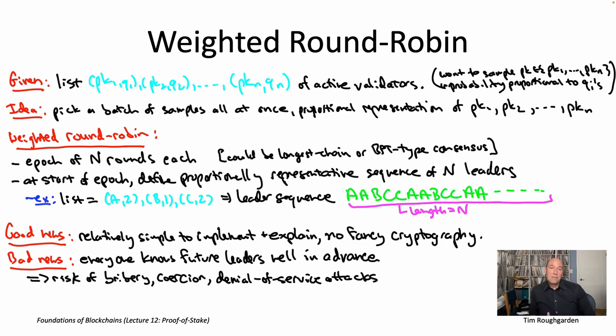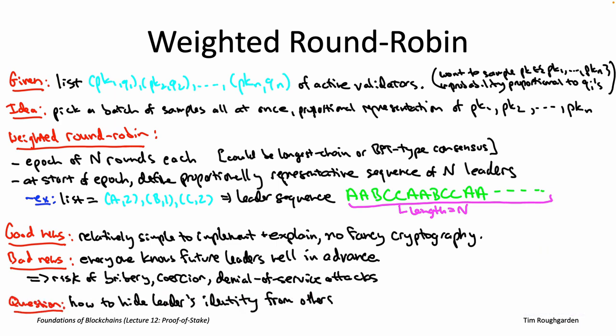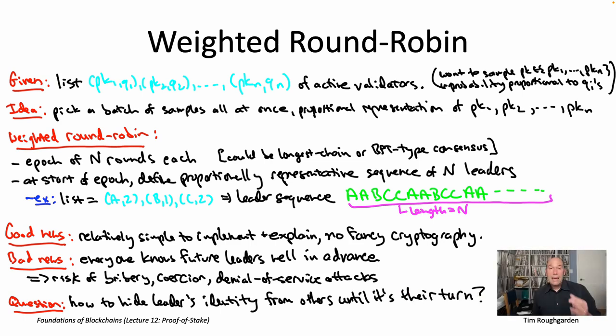But what about the truly permissionless case? Like what if we don't want to assume that a validator has the resources to fend off serious denial of service attacks? Is there some way we can do proof of stake sampling in a different, more sophisticated way so that a leader becomes known only at the moment in time at which it's going to be issuing its block proposal and not in advance? So answering that question is going to take us on a fun journey over the next few videos into randomness beacons and also verifiable random functions. So that's what's coming up next.